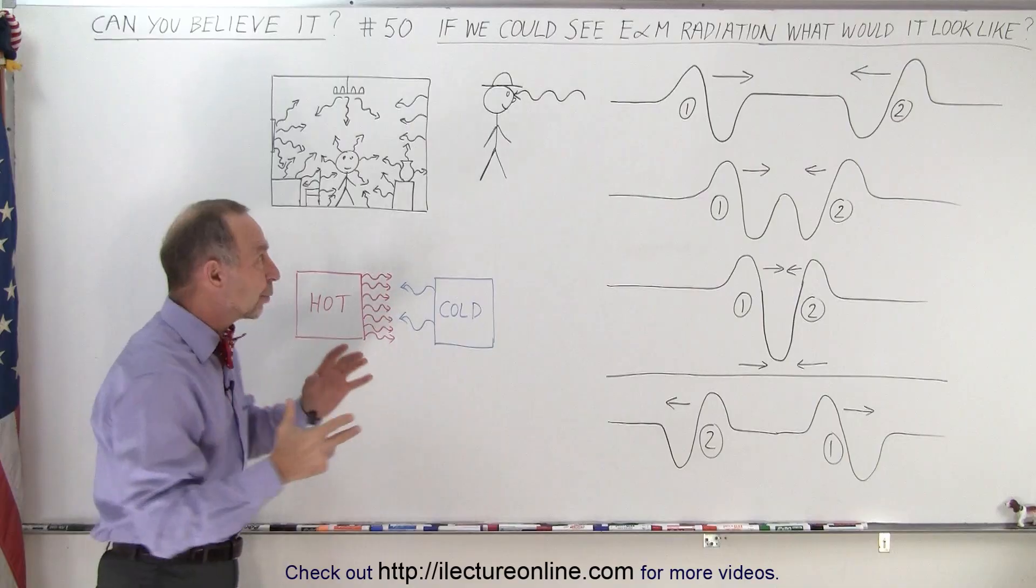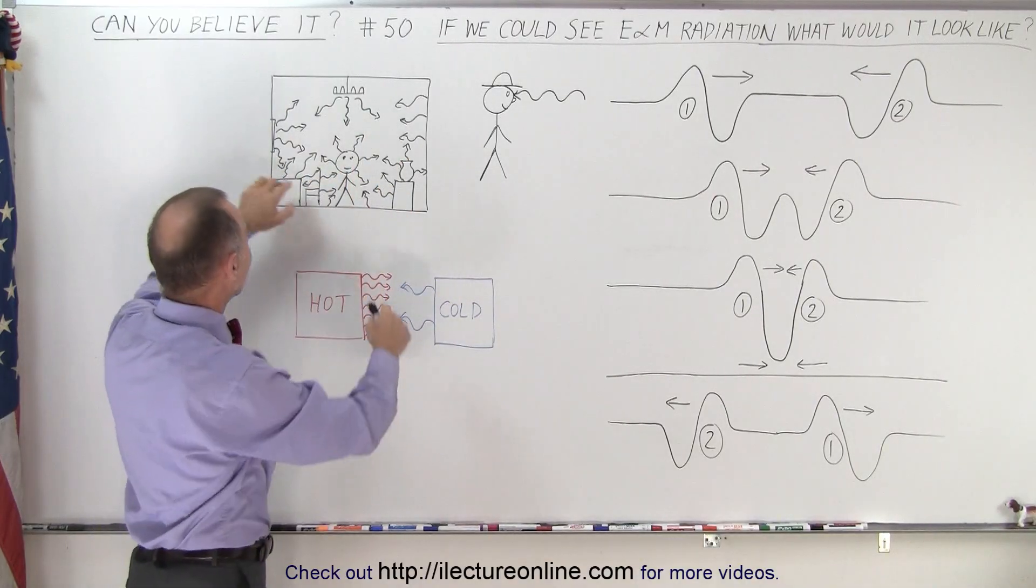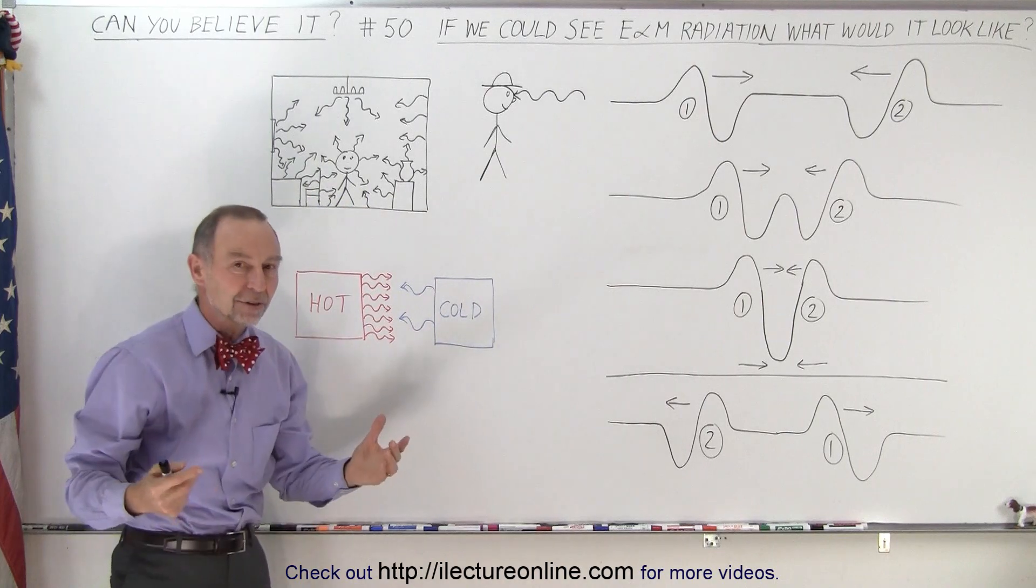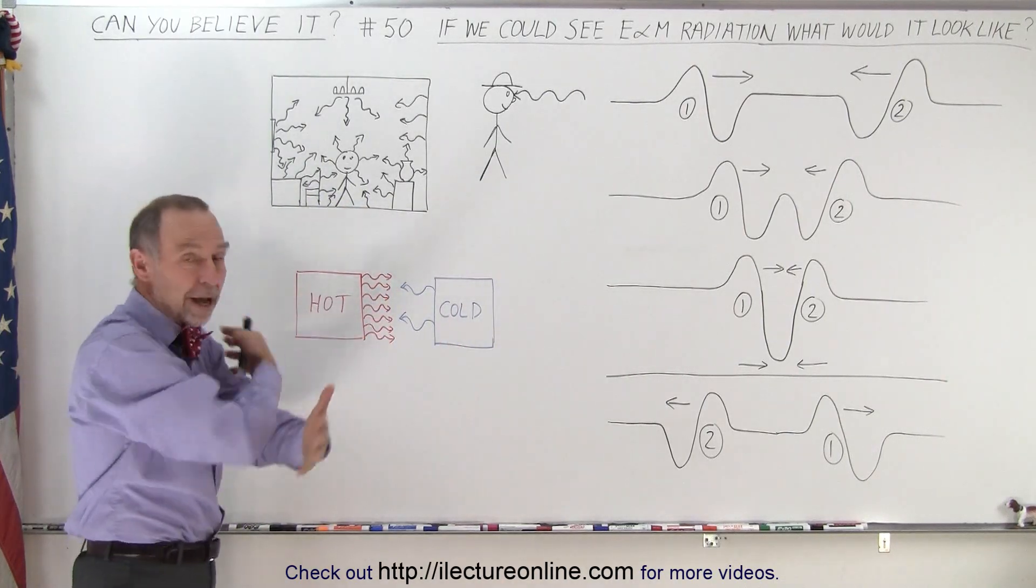So imagine now that we have this in three dimensions. So here I try to picture a room with a person, a desk, a chair, a vase, the walls, the ceiling, everything is producing enormous amount of radiation.